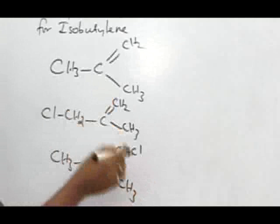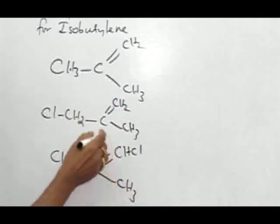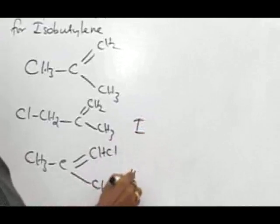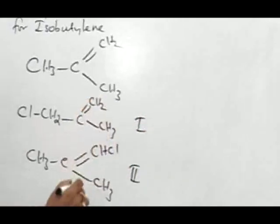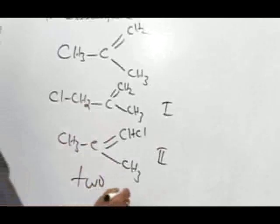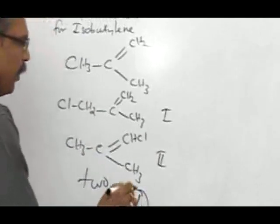So apart from this, no other monochloro derivative is possible. Therefore, we can conclude, this is the first derivative, this is the second derivative. So in total, we have two monochloro derivatives are possible. That is given in option number 1. Select option number 1.